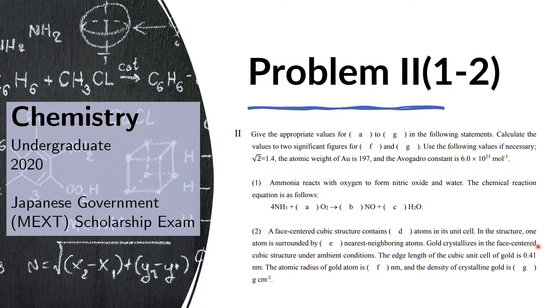Gold crystallizes in the face-centered cubic structure under ambient conditions. The edge length of the cubic unit cell of gold is 0.41 nanometers.